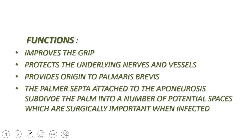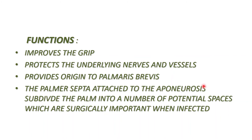Moving on to the functions of the palmar aponeurosis: firstly, it provides a firm attachment to the overlying skin, improving the grip of the hand. Secondly, it protects the major vessels and nerves underneath and prevents the long flexor tendons from bow-stringing. Thirdly, it provides origin to the palmaris brevis muscle along its ulnar side. Additionally, the palmar septa attached to the aponeurosis subdivide the palm into potential spaces, which are surgically important when infected.